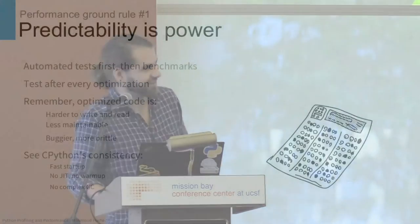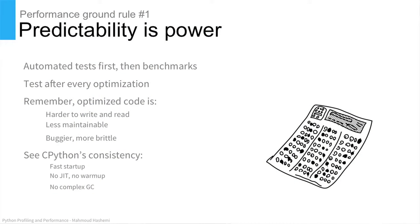Third, we have to abide by Amdahl's law. Number one, predictability is power — this is really good news for Python developers because we have great tools for this. You have to establish what correct behavior is and write tests to code that actually does that before you can start optimizing. Write your tests before you write your benchmarks. It doesn't help if you're making mistakes very quickly. And then it's important to test after every optimization because optimized code is harder to write, harder to read, it's less maintainable, and it's buggier and more brittle. You're going to need those tests to make sure you don't have regressions as you go through.